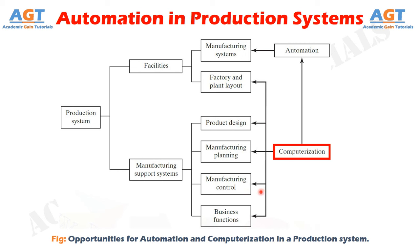Computer integrated manufacturing involves the information processing activities that provide the data and knowledge required to successfully produce the product. These activities are accomplished to implement the four basic manufacturing support functions: business functions, product design, manufacturing planning, and manufacturing control.